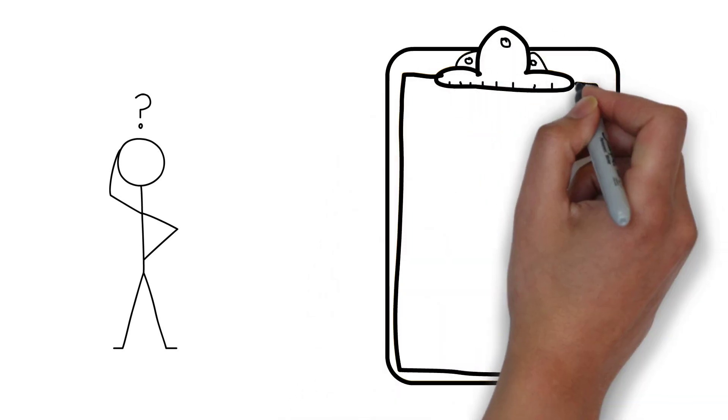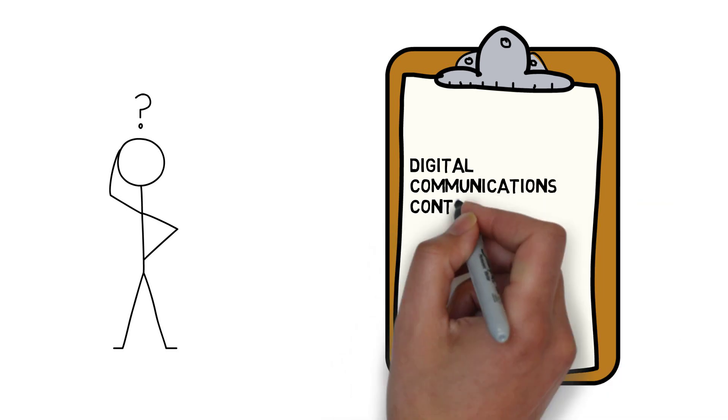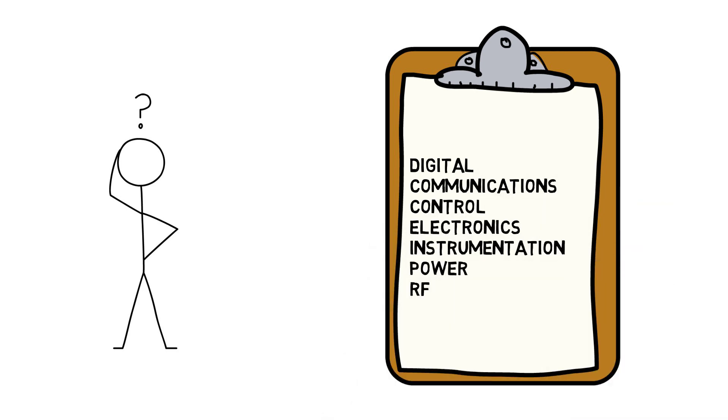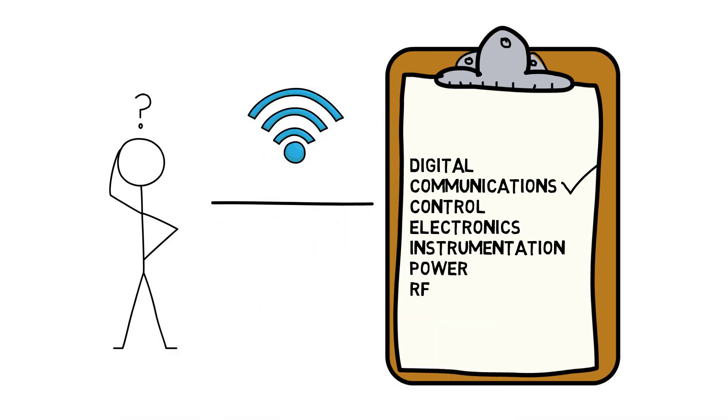When you are a junior or senior in electrical engineering, you typically have the ability to choose elective courses that interest you. If you decide to take communications electives, you will learn about the rules of how information is transmitted over a medium. This means that it could be through the air, through a wire, or even the vacuum of space.